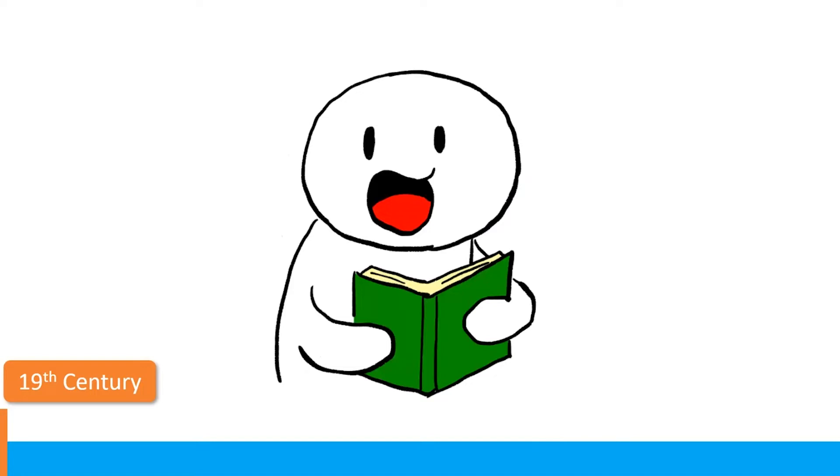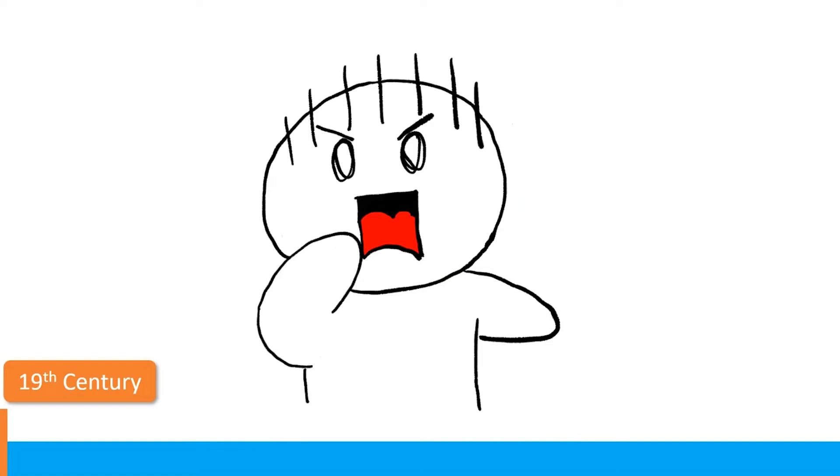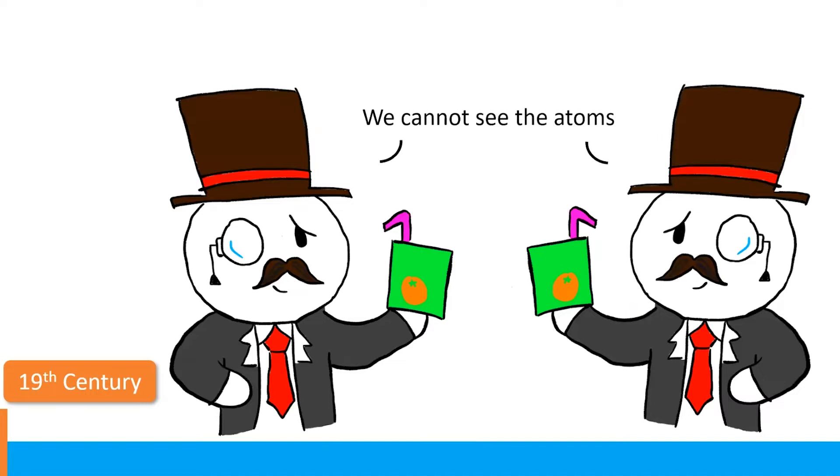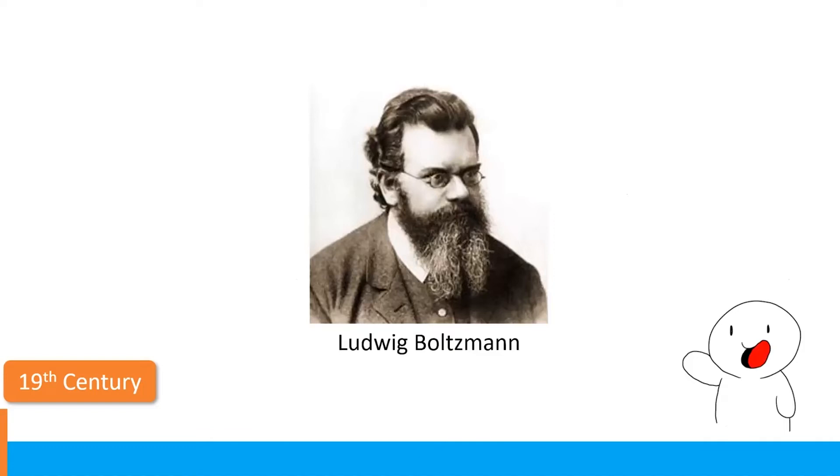One last interesting thing in the 19th century is, physicists don't believe in the existence of atoms. But I hear you say, I thought John Dalton already has a full atomic theory in 1808. And you would be right. The atomic theory has already been proven useful for calculations. However, because physicists insist that everything has to be measurable, they consider atoms as just something that's useful abstract concept for calculation and not something that's real.